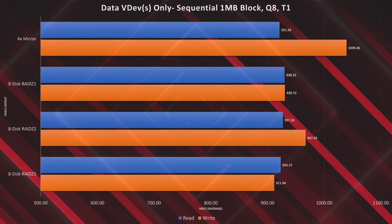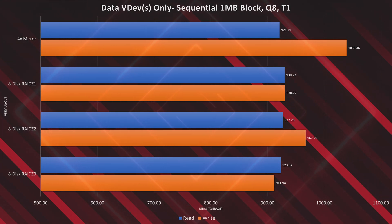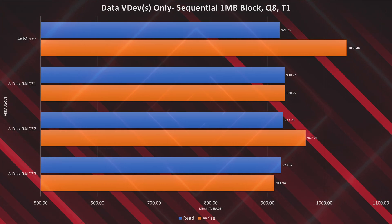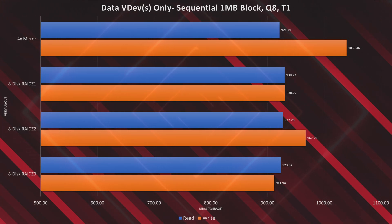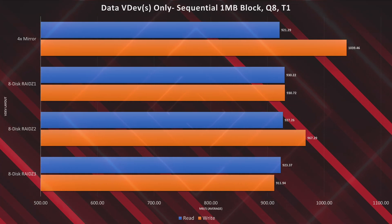First, let's compare the four pool layouts that only consist of Data VDevs. The first pool layout is four sets of mirrored 10TB disks, with the other layouts being variations of a single RAID Z1, Z2, and Z3 comprised of a single 8-disk VDev. Right away, we can see that for the 4x mirrored Data VDev layout there is a benefit to disk writes. But surprisingly, there is absolutely no difference in read performance for any Data VDev pool layout regardless of type, and very little to no performance difference for write operations outside of the 4x mirrored layout.